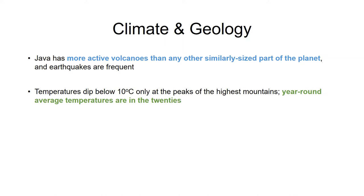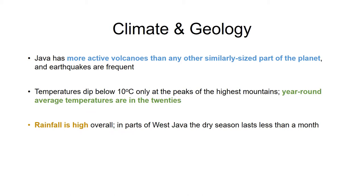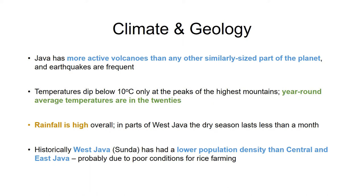Temperatures dip below 10 degrees only at the peaks of the highest mountains. Average temperatures are in the 20s and on the north coast even in the 30s — basically, it's hot. Rainfall is high overall, and in parts of West Java the dry season is only about a month long, while in East Java it can be as long as nine months. West Java historically had much lower population density because high rainfall leaches nutrients from the soil, making it less suited for growing rice.